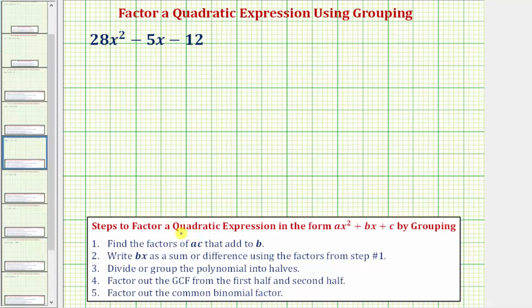The steps to factor a quadratic expression in the form ax squared plus bx plus c by grouping are given here. Step one, we want to find the factors of ac that add to b.